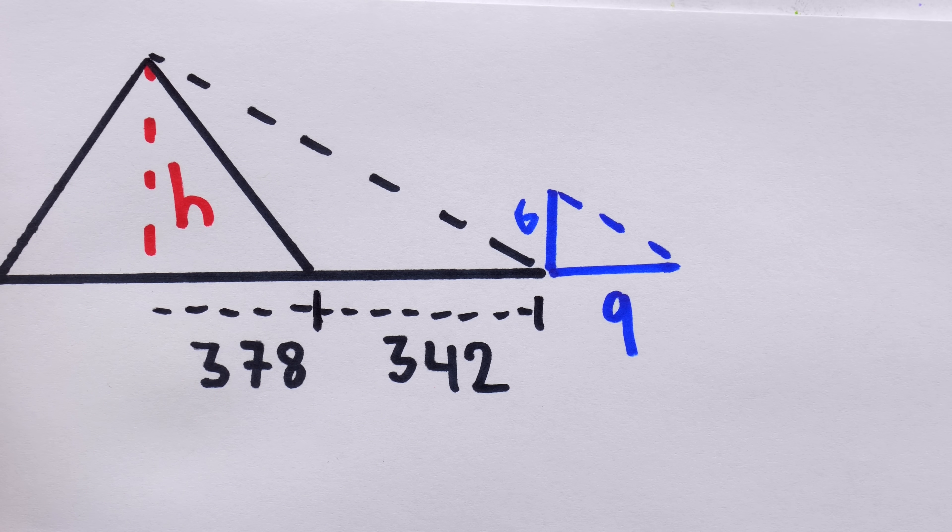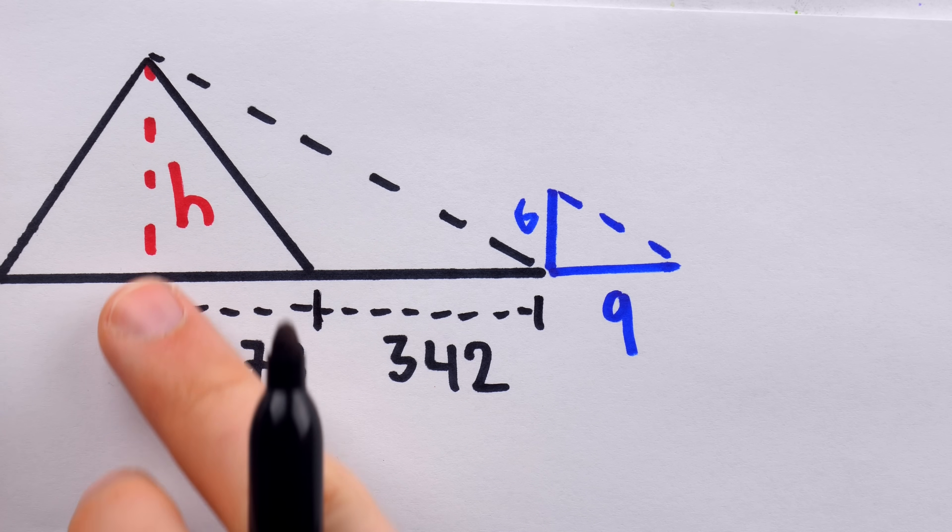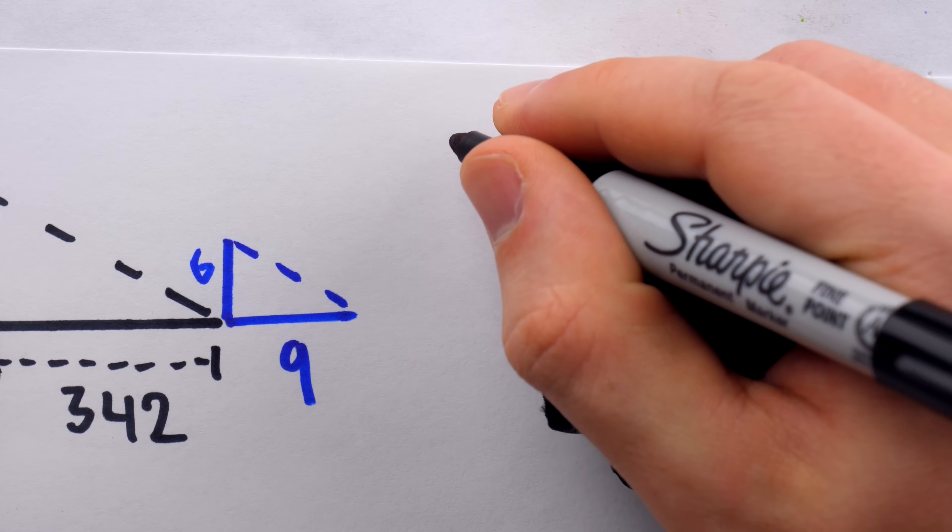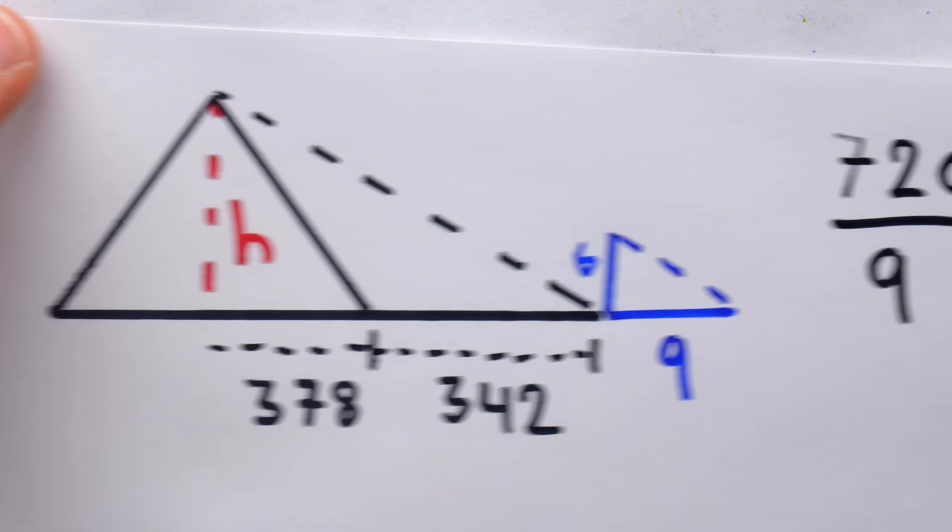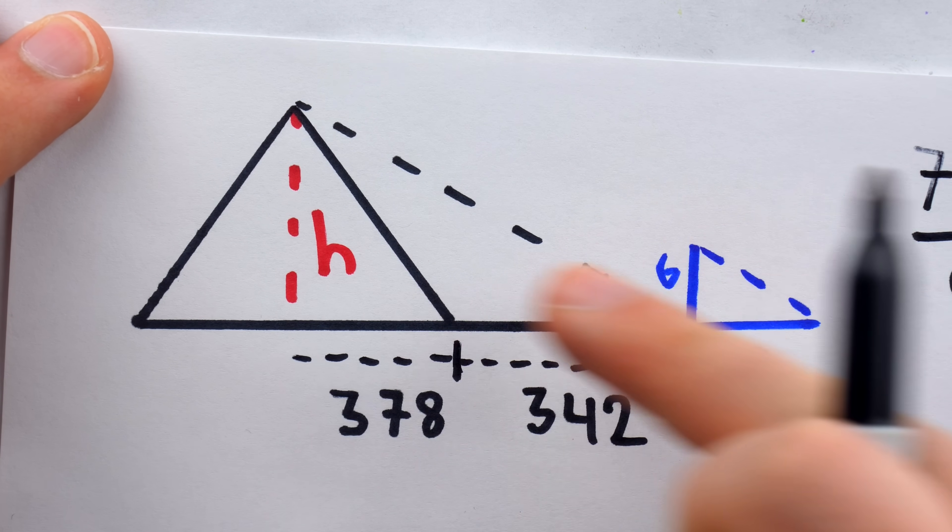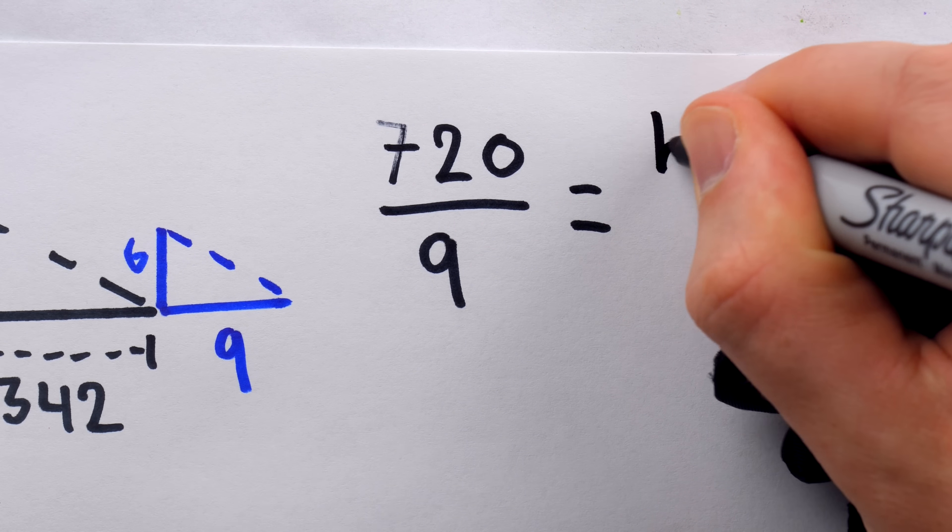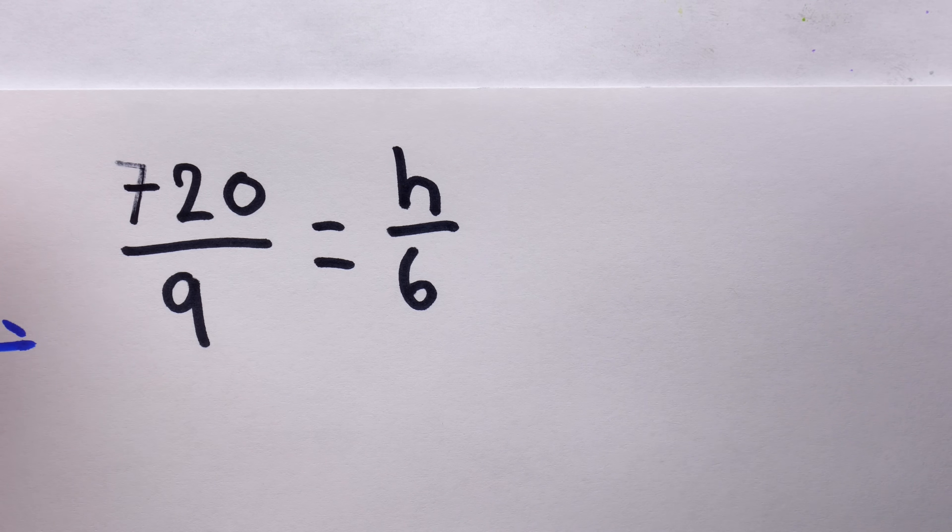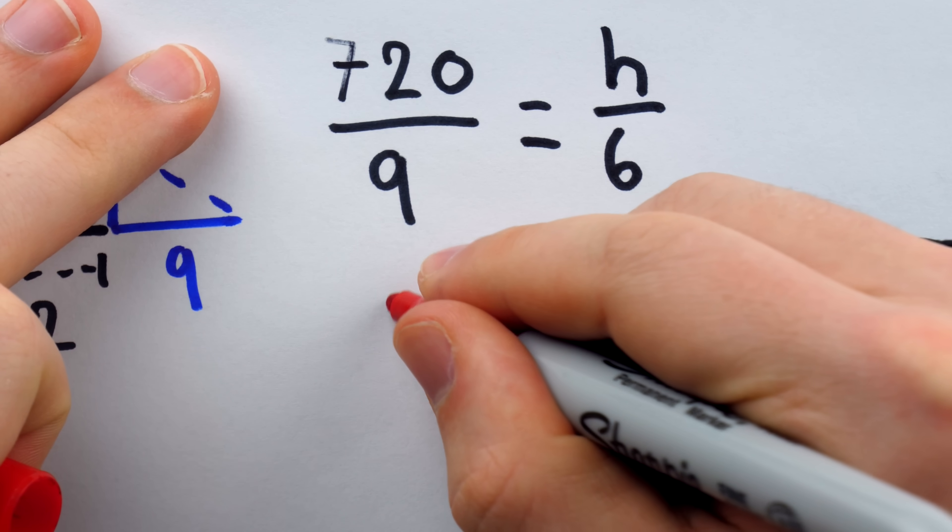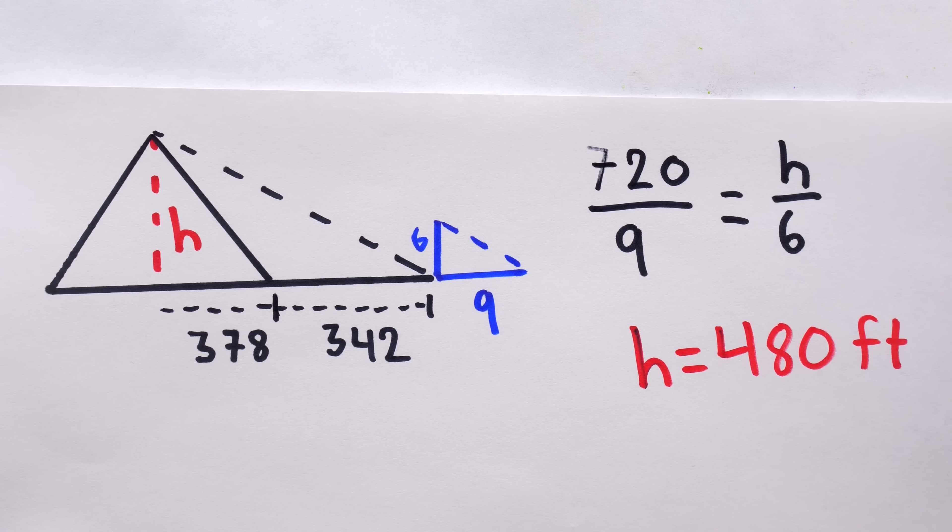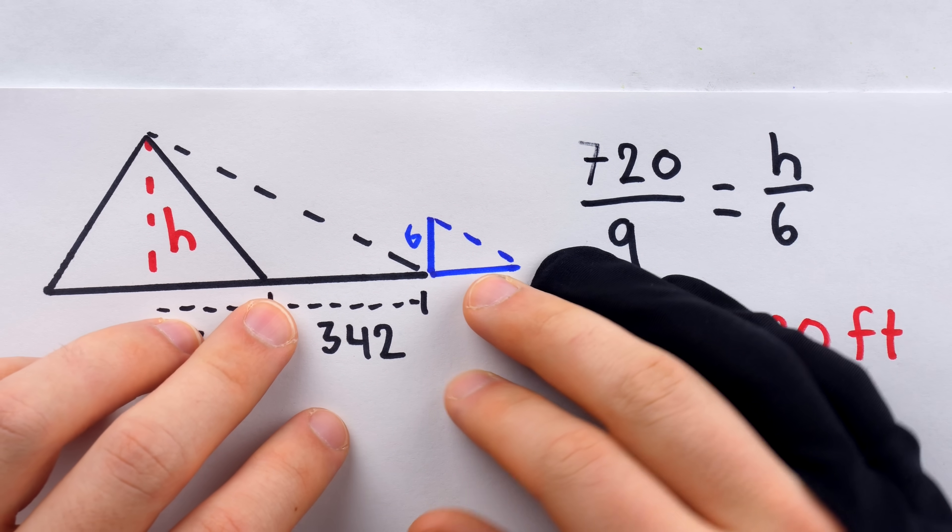Since the sides of similar triangles are proportional, Thales said that the ratio of this base to this one, which is 720 to 9, must be equal to the ratio of the height to this staff height, so that's h over 6. It was then easy to solve this equation for h and arrive at a height for the great pyramid of 480 feet. And for its time, such a measurement was undeniably impressive.